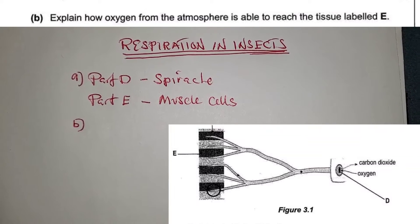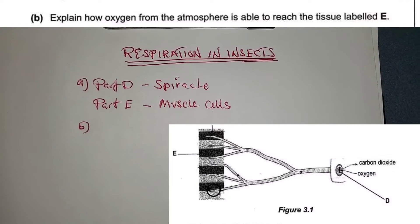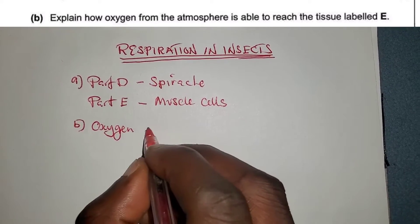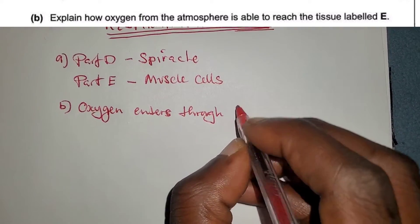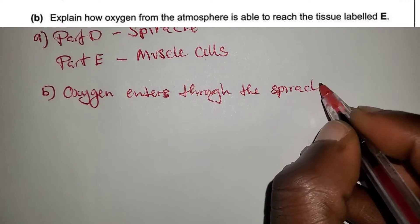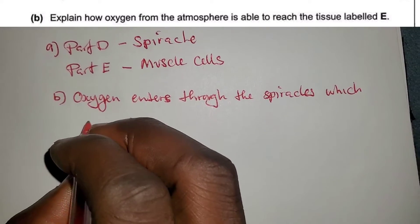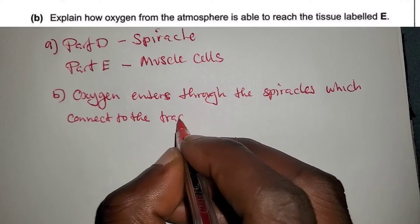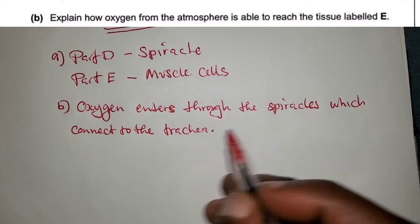Question B asks: explain how oxygen from the atmosphere is able to reach the tissue labeled E, which are muscle cells. Oxygen enters through the spiracles, which connect to the trachea.